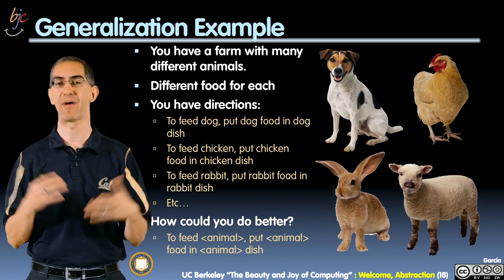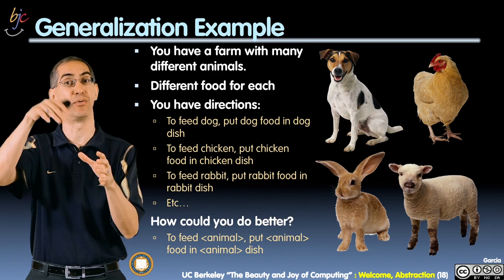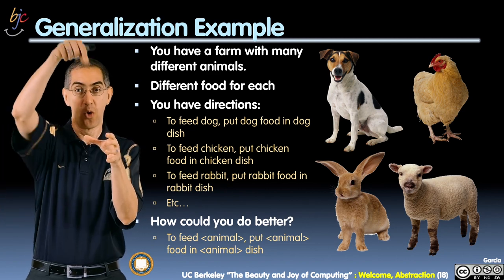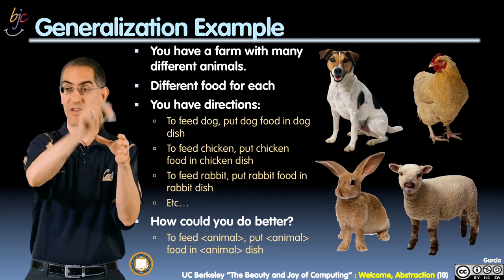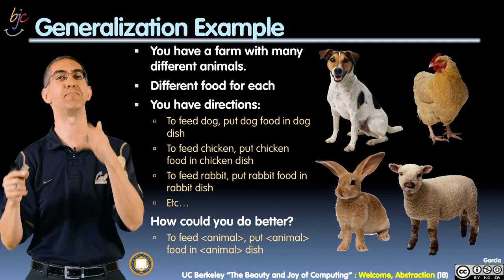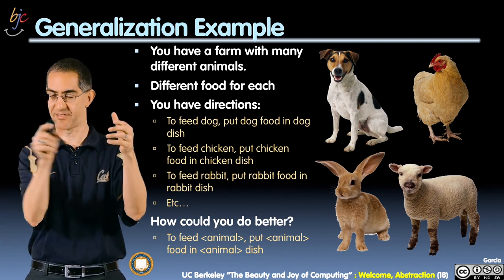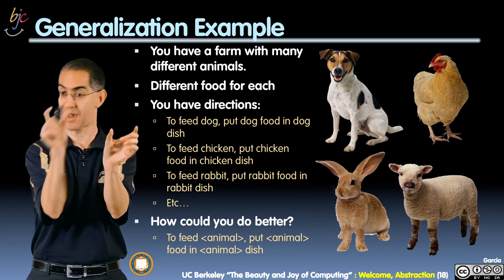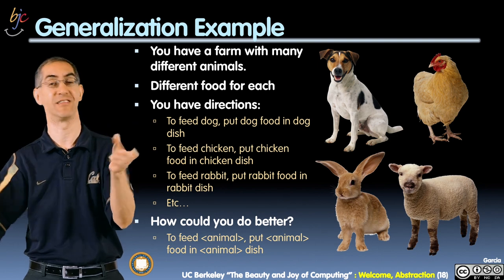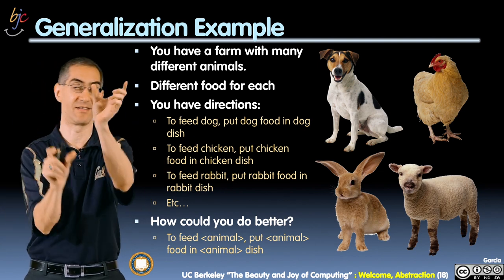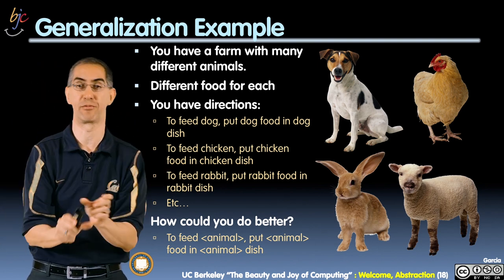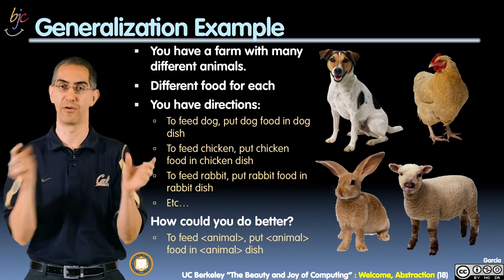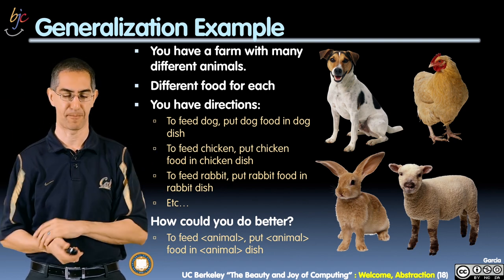Thinking about this from computer science, 'animal' is the input. The particular animal would go in that slot — very much like Mad Libs, where you have slots like 'a noun' or 'verb,' and you fill them in. Here, you have the animal and you copy it into the thing you're supposed to feed, what the food is, and what the dish looks like. The same input might go multiple places.